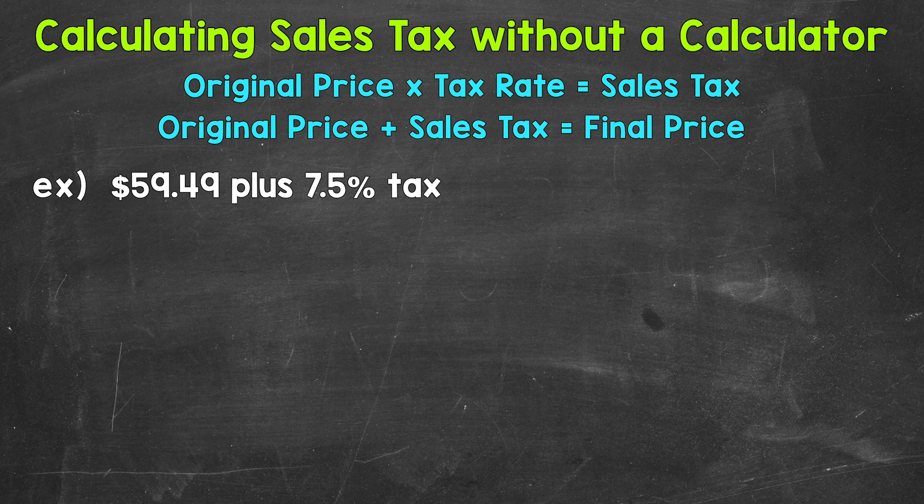Now the tax rate is in the form of a percent, so we want to get this percent to decimal form. Percent means per 100, so we divide the percent by 100 to convert it to a decimal. We can do this by moving the decimal twice to the left, and it's as simple as that.